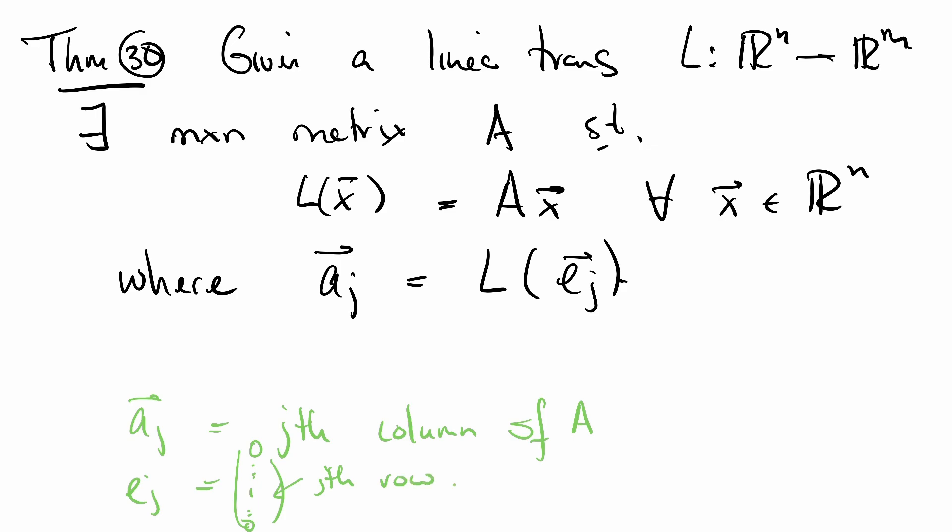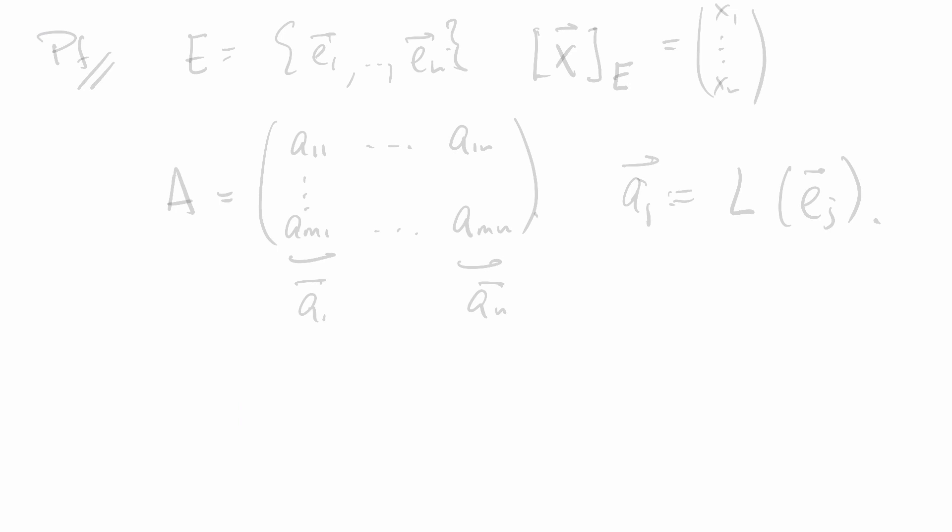Let's prove it. Say E is the standard basis E_1 through E_N. And then we know that for any X, the coordinate vector with respect to the standard basis is essentially the same vector.